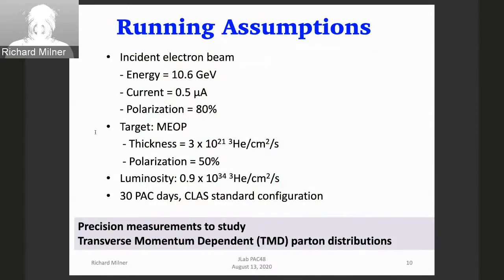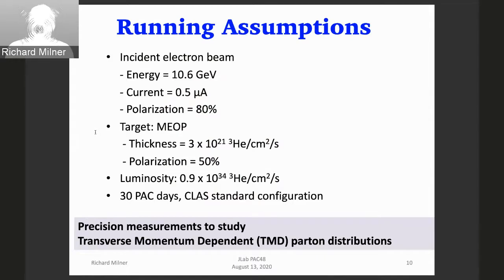The assumptions are 10.6 GeV, the maximum current allowed by the present Hall B infrastructure which is half a microamp, beam polarization of 80%, target thickness with polarization of 50%, and luminosity in helium-3 of 0.9 times 10^34, for 30 PAC days. Everything shown is based on these assumptions.